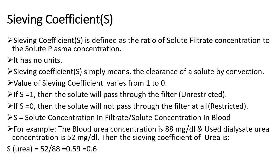Sieving coefficient represents the clearance of a solute by convection, and its value ranges from 0 to 1. If the sieving coefficient is 1, the solute passes through the filter unrestricted. If it is 0, the solute does not pass through at all — restricted transport. For example, if blood urea concentration is 88 mg/dL and dialyzer urea concentration is 52 mg/dL, then S(urea) = 52 ÷ 88 = 0.59, or approximately 0.6. This means roughly 60% of urea is removed by convection.